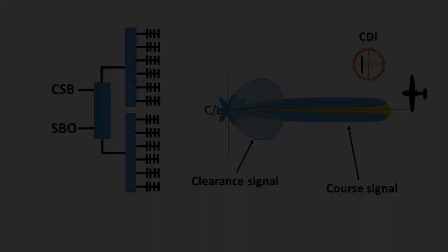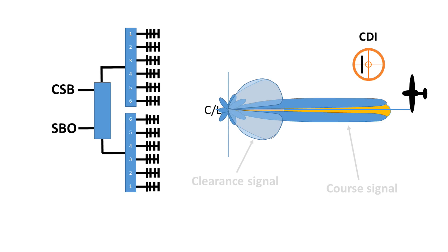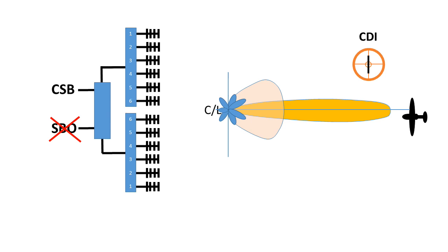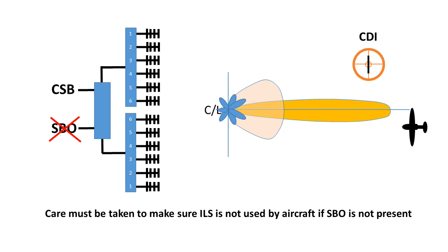There's one major drawback in the CSB-SBO scheme: if the SBO signal fails or is turned off, immediately the CDI centres as the receiver is getting the CSB signal only with its equal tone modulation. This is a highly dangerous situation — no matter where the aircraft is in relation to the centreline it receives an on-course signal. For this reason great care must be taken to prevent pilots using the ILS if the SBO signal is absent. Equipment failure is taken care of by comprehensive monitoring and automatic changeover to standby equipment. But sometimes during maintenance it's necessary to radiate just CSB signals alone, and appropriate warning to pilots must be given.